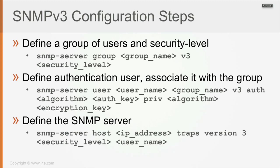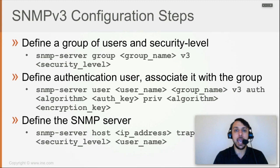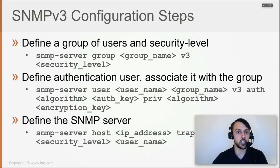If you take time to look at the configuration, it all makes sense. Why do you need the group to define the security level? Why do you need the users? Because users are associated with the group, and at the user level you define authentication and encryption algorithms. And then ultimately you define the SNMP server manager, its version, the security level, and which username to use. Just know how the technology works, look at the command structure once, and it will stick if you understand logically whether the configuration template is logical.